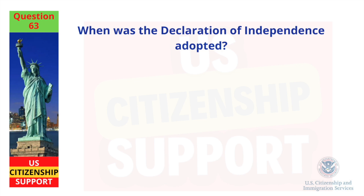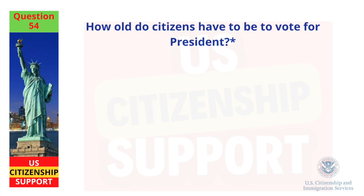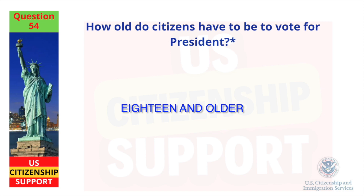When was the Declaration of Independence adopted? July 4, 1776. How old do citizens have to be to vote for President? 18 and older.